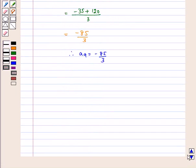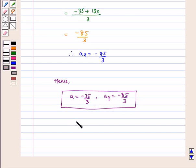Hence A is equal to minus 35 by 3 and A9 is equal to minus 85 by 3. And this is our required answer. I hope this is clear to you. Bye and have a nice day.